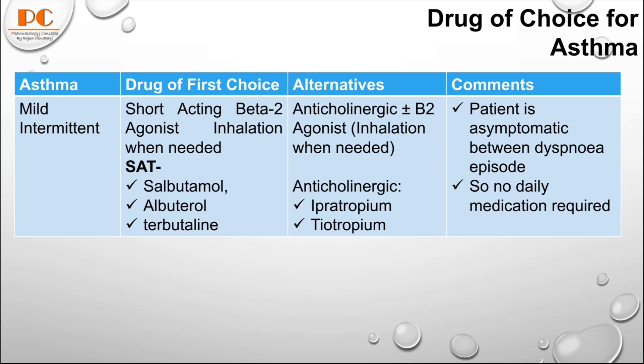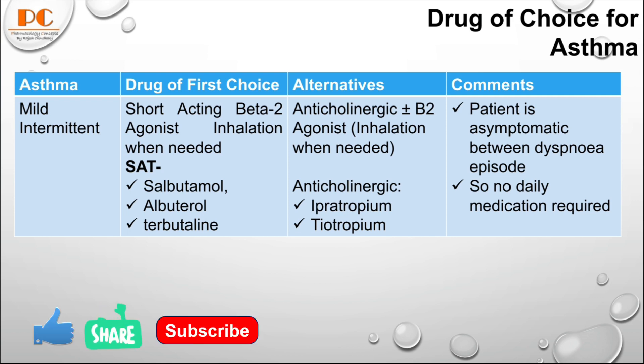For the alternative, we can use an anticholinergic drug with or without beta-2 agonist, inhaled when needed. Anticholinergic drugs include ipratropium and terbutaline, which can be used for mild intermittent asthma. The patient is asymptomatic between dyspnea episodes, so non-daily medication is required.